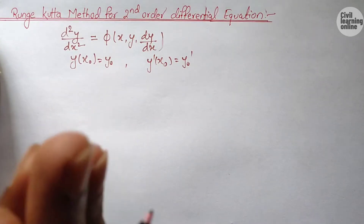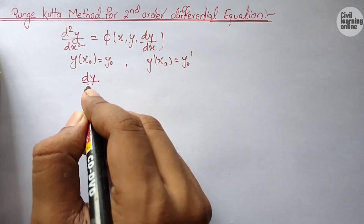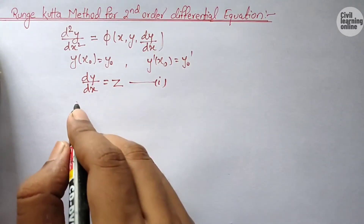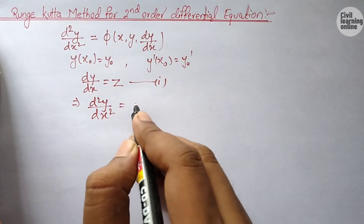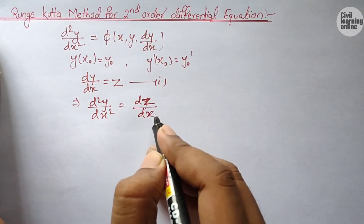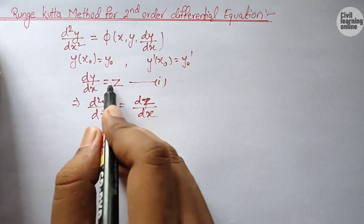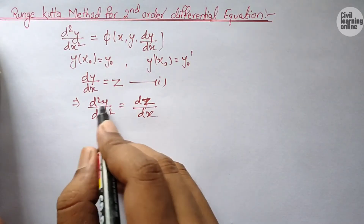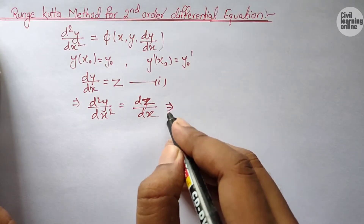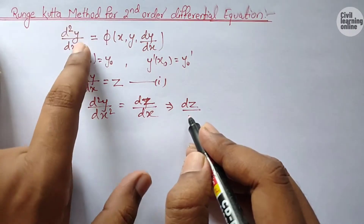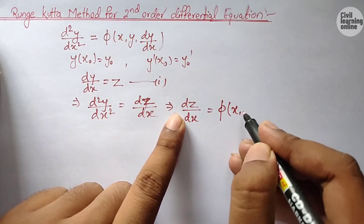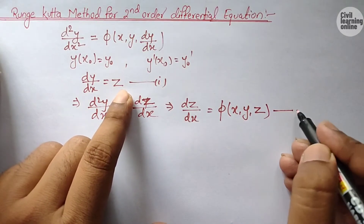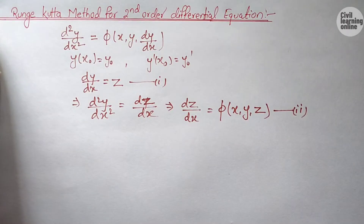After that we need to make the assumption that dy/dx = z — this will be our first assumption. If we assume dy/dx = z, then d²y/dx² will automatically become dz/dx. Rewriting this, d²y/dx² = dz/dx. From here, our given equation will change into the form dz/dx = φ(x, y, z), where dy/dx becomes z. This is our second condition. Now let us take an example and solve it.